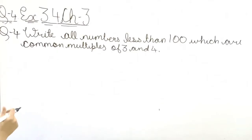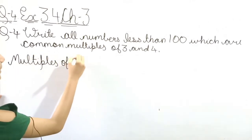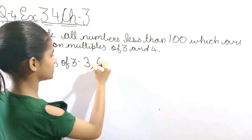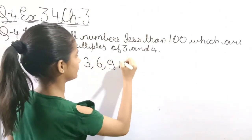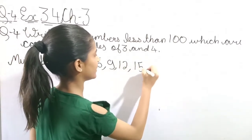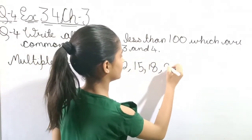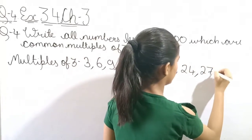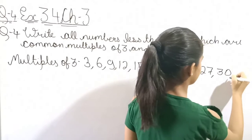First we have to write multiples of 3. Let's write: 3 ones are 3, 3 twos are 6, 3 threes are 9, 3 fours are 12, 3 fives are 15, 3 sixes are 18, 3 sevens are 21, 3 eights are 24, 3 nines are 27, 3 tens are 30.